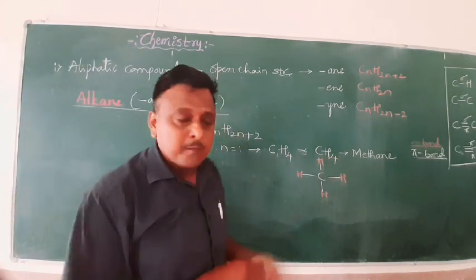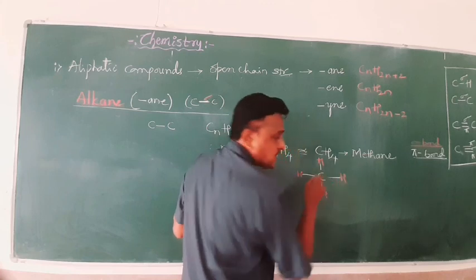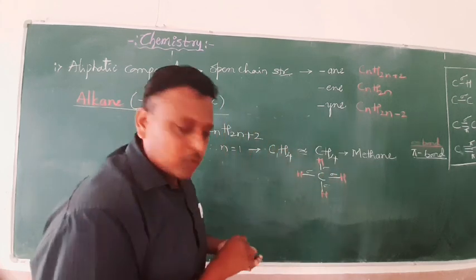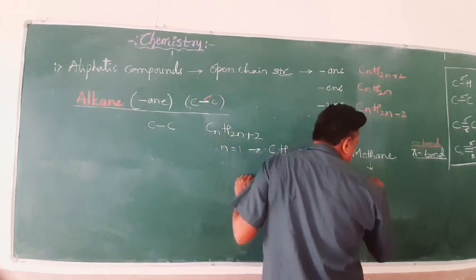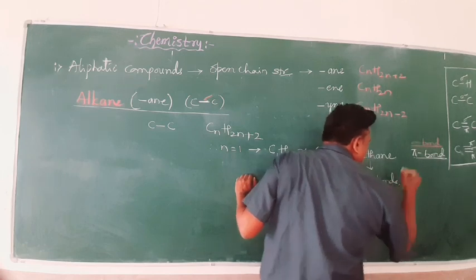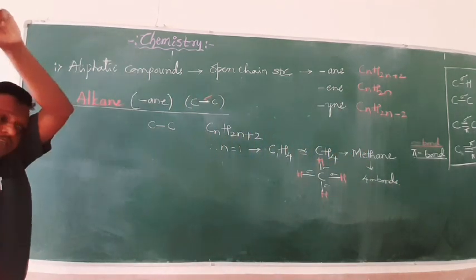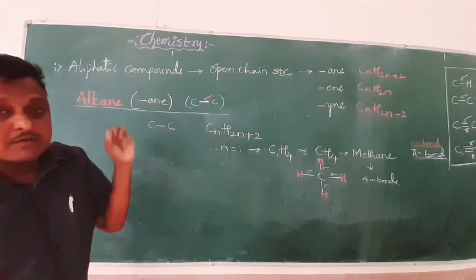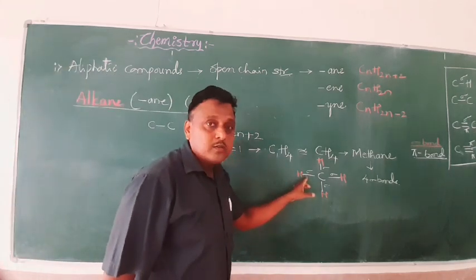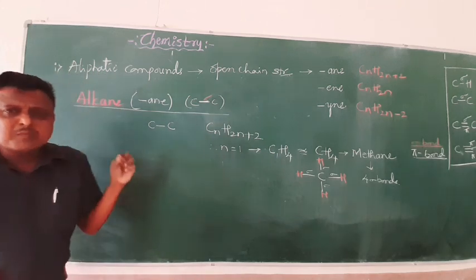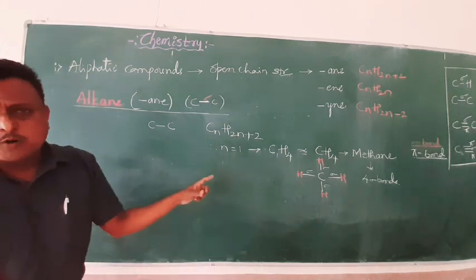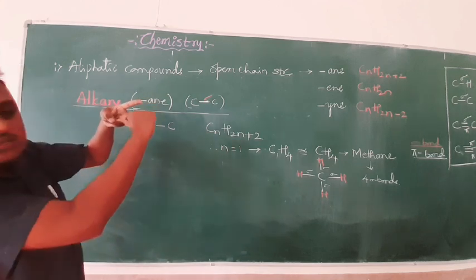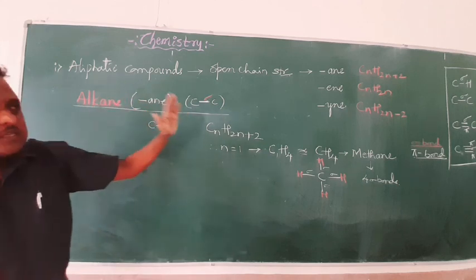Methane formula is CH₄. It has four C-H bonds — each is a sigma bond — so methane has 4 sigma bonds totally. This is a competitive exam question; JEE can ask how many sigma bonds are present in methane or propane. Carbon-carbon single bond is sigma, carbon-hydrogen is sigma, double bond has one sigma and one pi, triple bond has one sigma and two pi bonds.